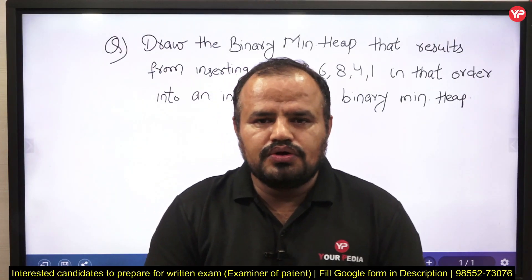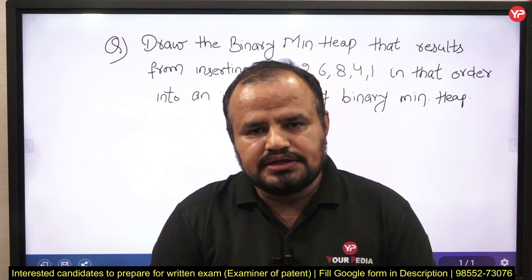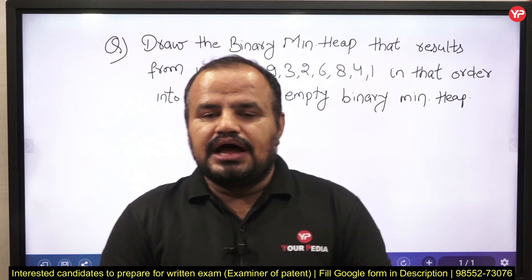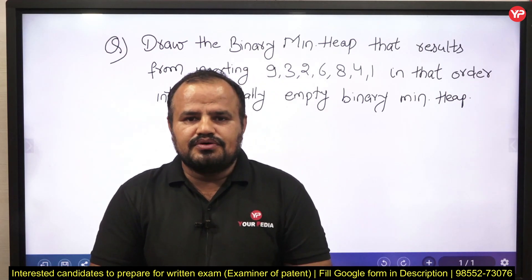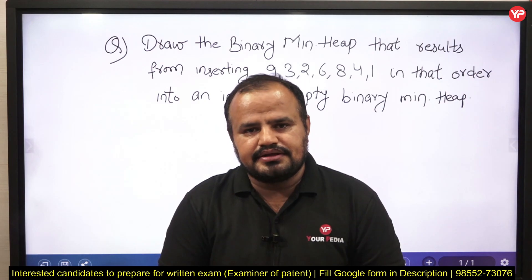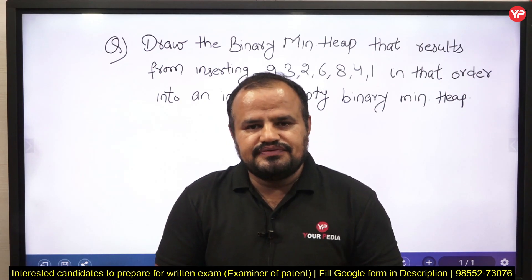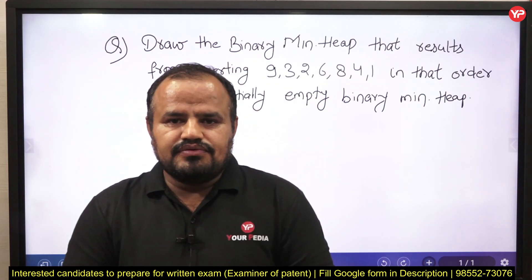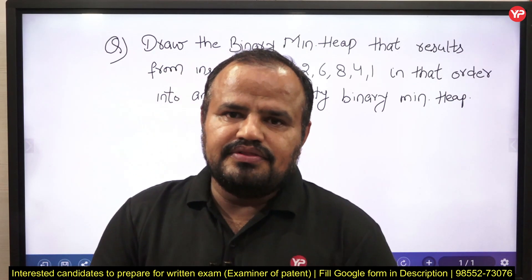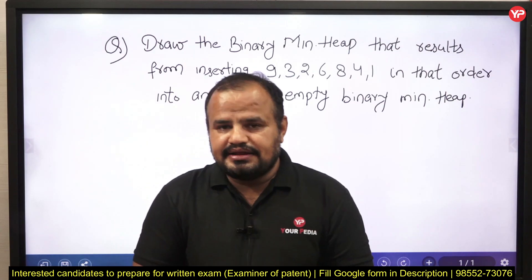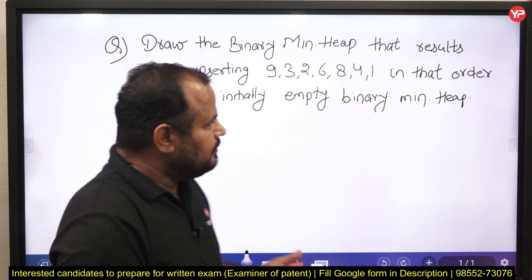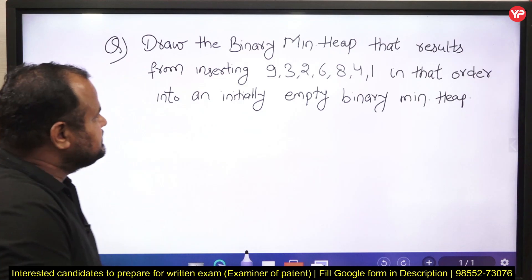Hello students, welcome to URpedia. In this video, we are going to discuss a previous year question from the Controller of Design and Patent exam. Recently they advertised almost 55 vacancies for computer science, and the exam is descriptive in nature. This is a problem which was asked in 2018.